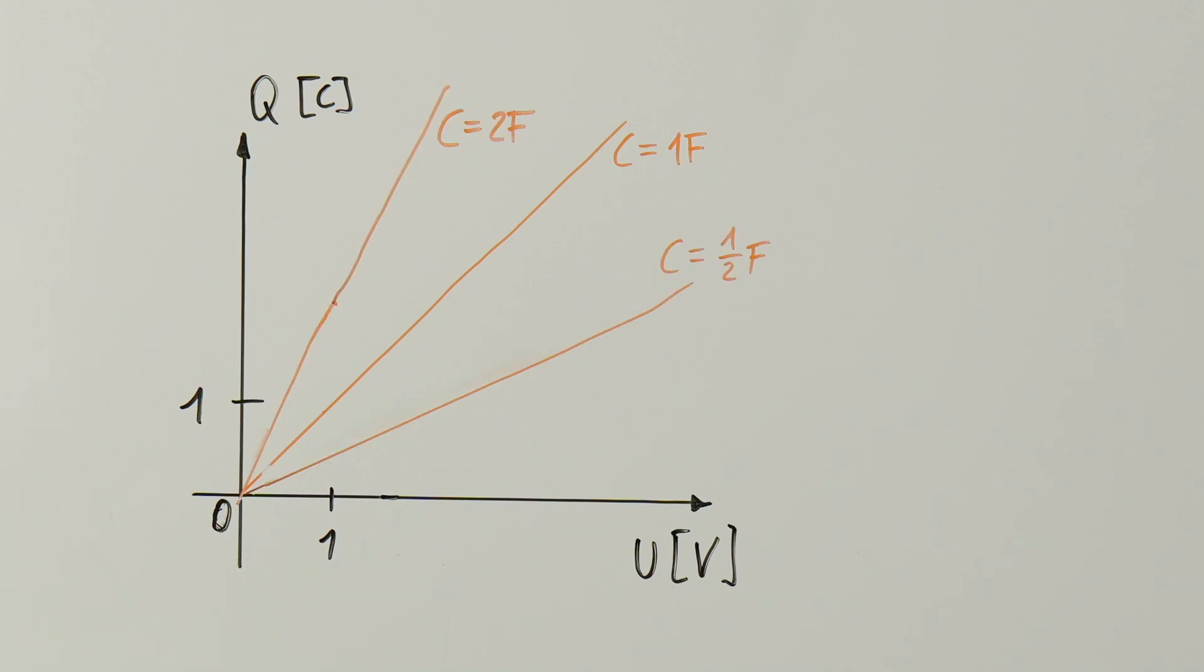If we look at a charge over voltage diagram, we can see that the charge rises linearly with the voltage. Further, we see that for different capacitance values, the slopes are steeper or gentler. In reality, every component has some capacitance. However, there are cases in which we want to have a lot of capacitance intentionally. Then we will need a capacitor.